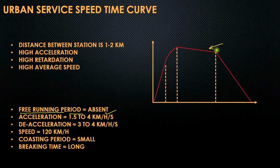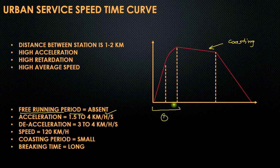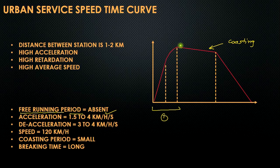What appears to be the free running period is actually the coasting period. In the coasting period, the electric locomotive is not drawing any electrical power from the supply. We require electric locomotives which have a very short acceleration period, as you can see — a very short notching and accelerating period. It does not have any free running period.